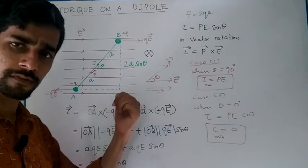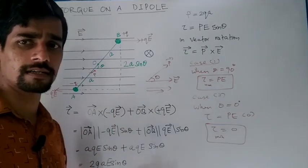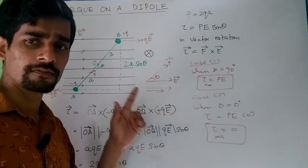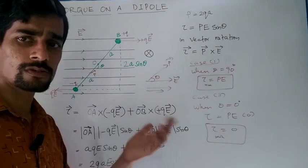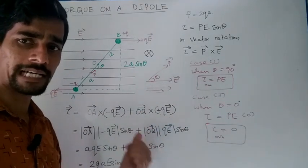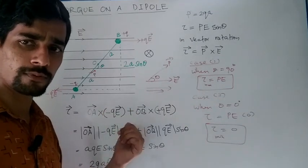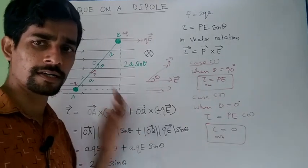In this case, in the case of uniform electric field, the forces cancel itself. But in the case of non-uniform electric field, the forces will not cancel itself. So there will be a force as well as a torque if the dipole is placed in a non-uniform electric field.